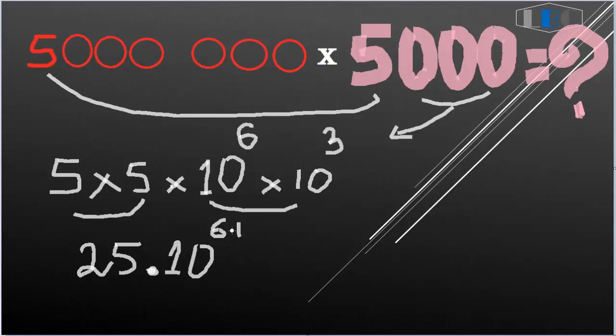We calculate the sum of the exponents. So it's 25 times 10 to the power of 6 plus 3, which is 25 times 10 to the 9.